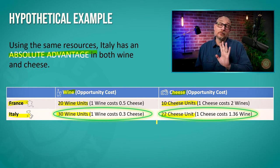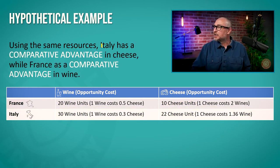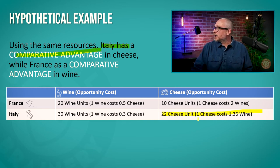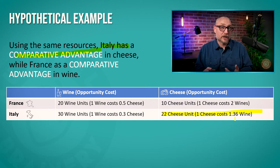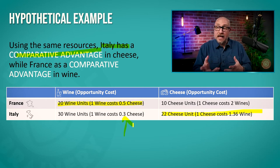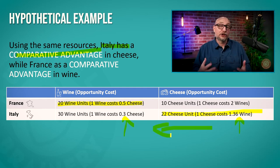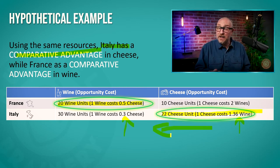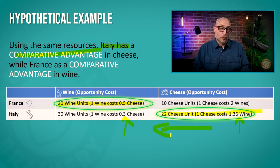When we look at comparative advantage, we see that Italy has a comparative advantage in cheese, because one unit of cheese costs only 1.36 units of wine when you figure out the opportunity cost. Whereas for France, one unit of wine only costs half a unit of cheese. Even though Italy is more efficient at cheese than France, Italy's efficiency in wine is greater than its efficiency in cheese. Therefore, when it comes to comparative advantage, France should focus on making wine and Italy should focus on making cheese.